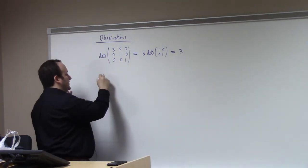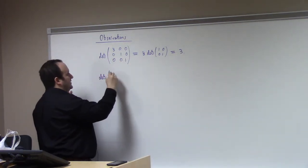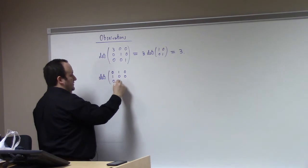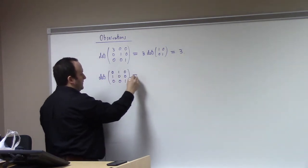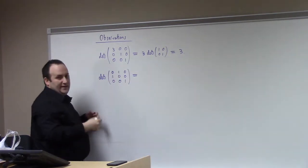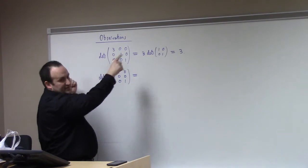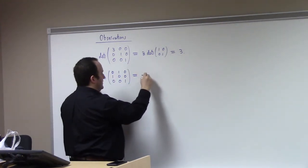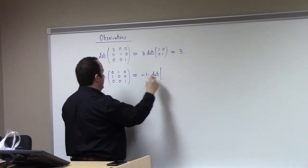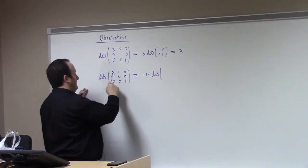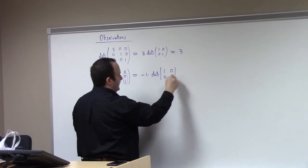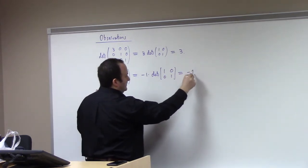On the other hand, if I look at the determinant of a permutation matrix — say 0, 1, 0; 1, 0, 0; 0, 0, 1 — I'll expand across the top row. I get minus 1 times the determinant of the remaining 2x2, which is minus 1. That's minus 1.